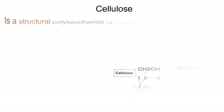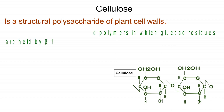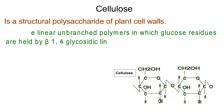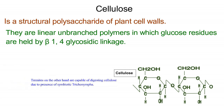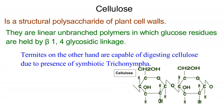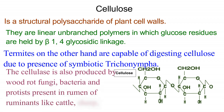Cellulose is a structural polysaccharide of plant cell walls. They are linear unbranched polymers in which glucose residues are held by beta-1,4 glycosidic linkage. Most animals lack the enzyme that can break beta-1,4 glycosidic linkage and thus cannot digest cellulose.